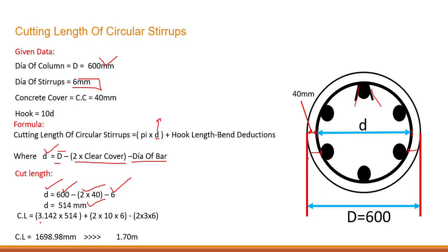And cut length will be equal to, as per this formula, pi into D. We have found out the D over here, so pi is basically 3.142. Remember this one, we need to find out this circumference and this circumference formula is pi into D. So pi is 3.142 multiplied by D, we have found it over here, 514.